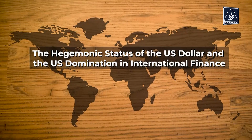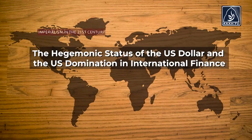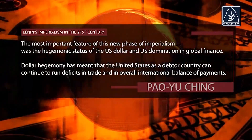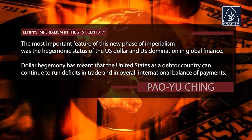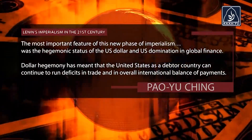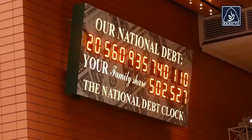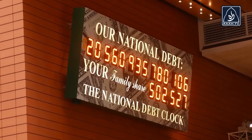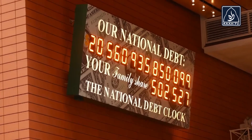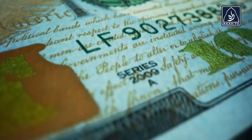The hegemonic status of the US dollar and US domination in international finance. The most important feature of this new phase of imperialism was the hegemonic status of the US dollar and US domination in global finance. Dollar hegemony has meant that the United States, as a debtor country, can continue to run deficits in trade and an overall international balance of payments. The US dollar became the international currency of the world — the medium of exchange, the unit of value, and the store of value for all countries, and the main form of foreign exchange reserves in central banks. This dollar hegemony is the backbone of US hegemony in economic, political, and military power of the US imperialist state.